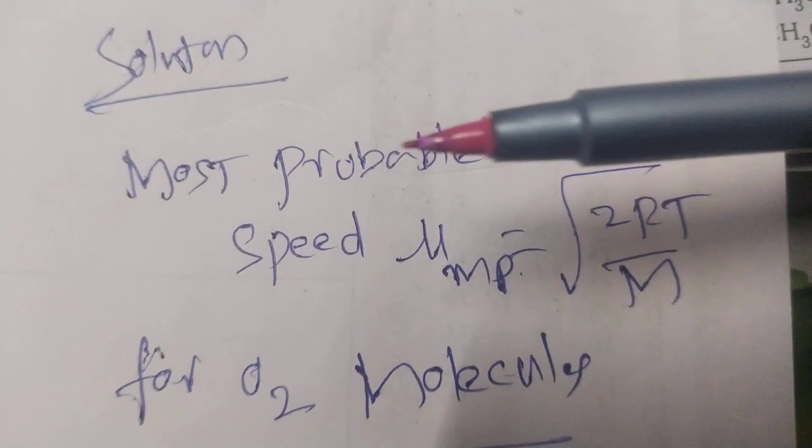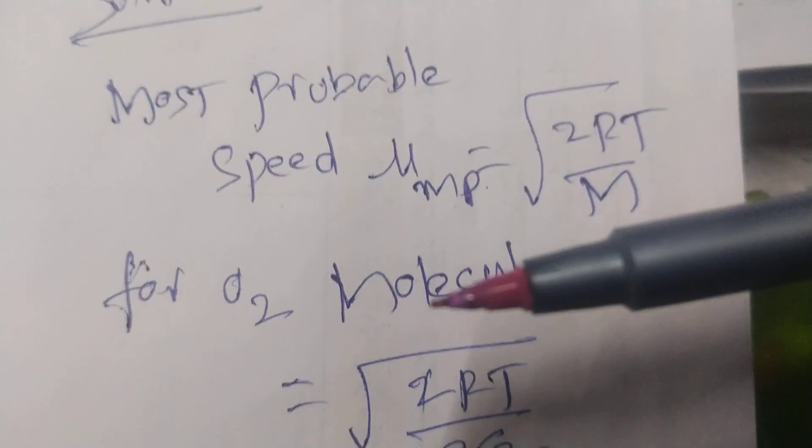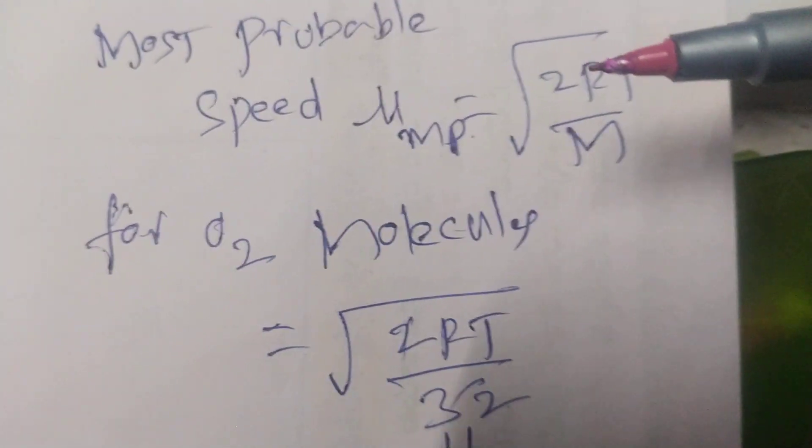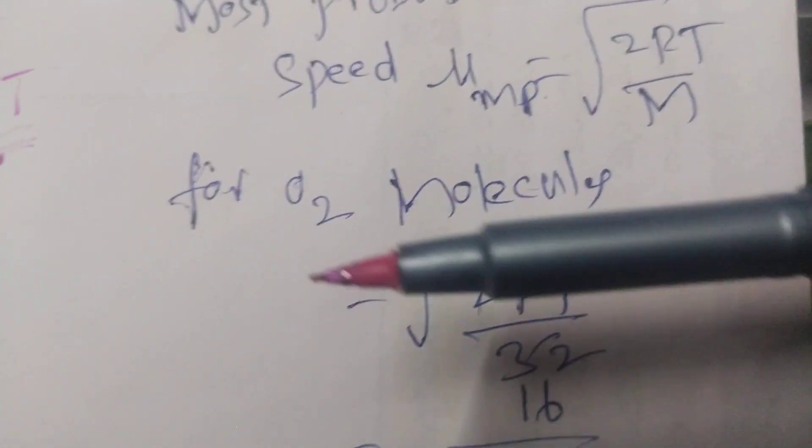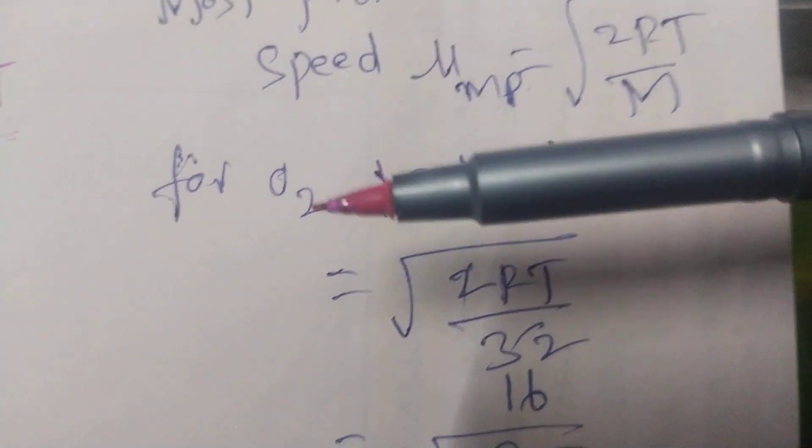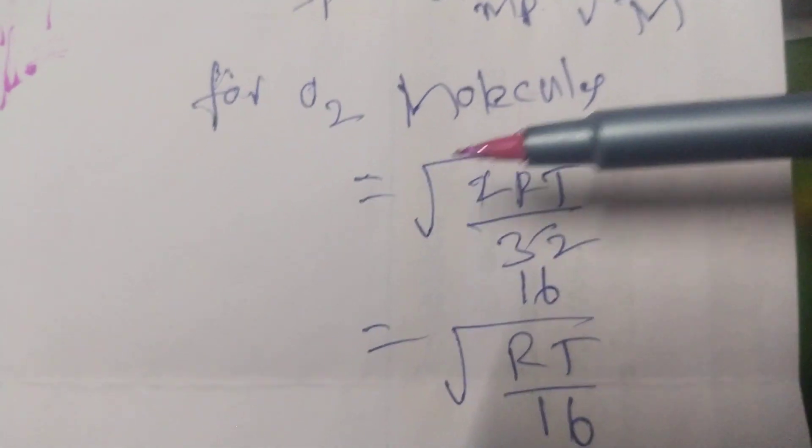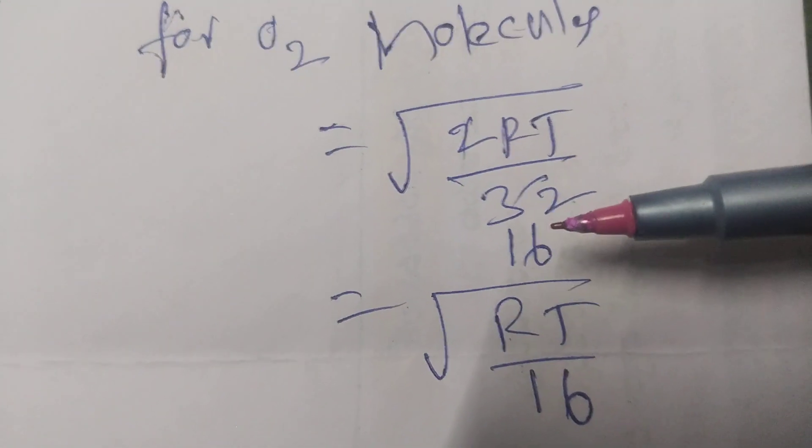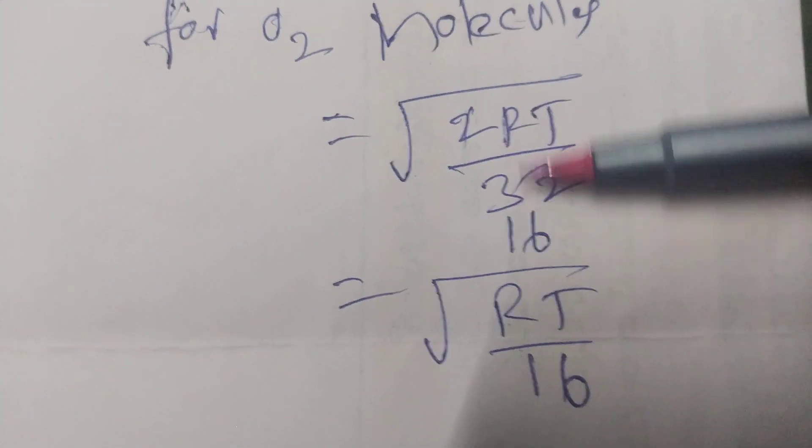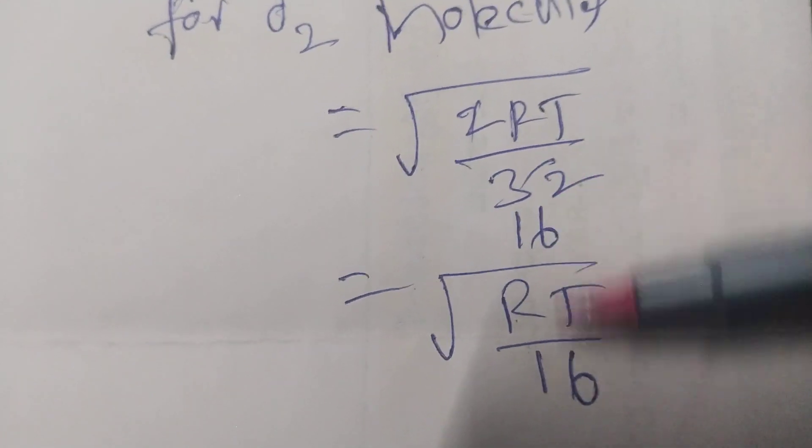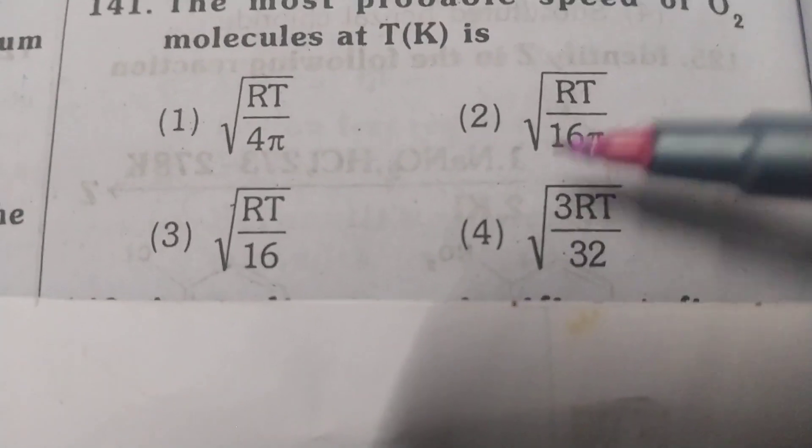Now let us go for the problem. Most probable speed of oxygen they asked. The formula is root 2RT by M, so oxygen molecular weight is 32. O is 16 plus 16, 32. Root 2RT by 32, 2 divided by 32 is 1 to 16, square root of RT by 16 is the right answer. B is the right answer.